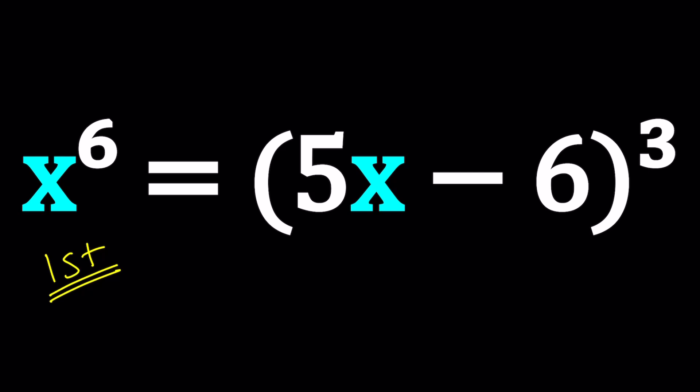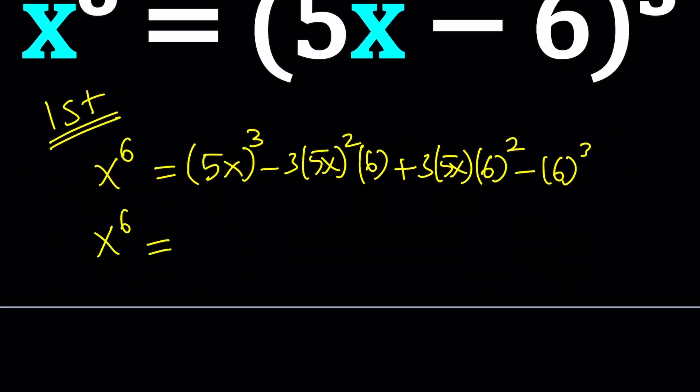So for my first method, I'm going to do what is more painful: expand the cube. If you expand a minus b to the third power, I'm going to do it normal this time. You can also use a different identity. Let's just use the binomial theorem. 5x to the third minus 3 times 5x squared multiplied by 6 plus 3 times 5x times 6 squared minus 6 to the third power. You don't have to put the 6 in parentheses.